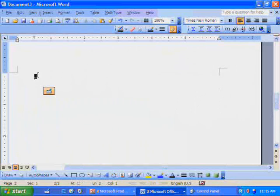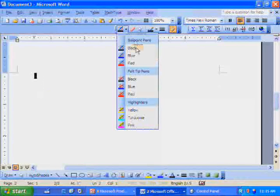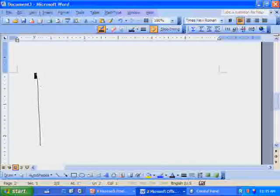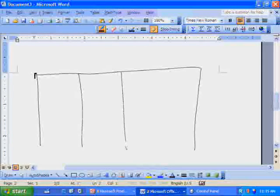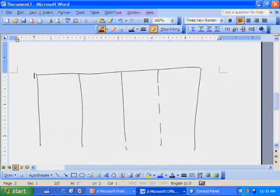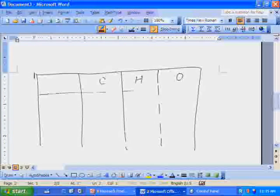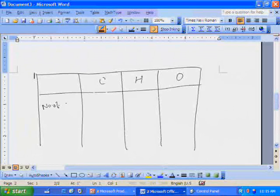So put all these values. Let's look at this table. You have to find the empirical formula of the compound, so the mole values of C, H, O. Number of moles.